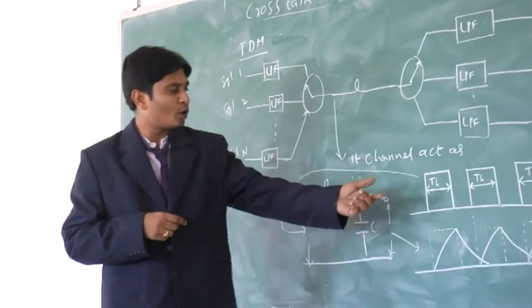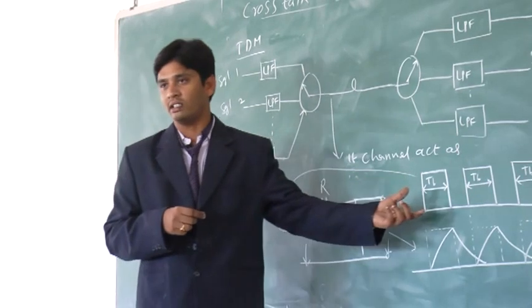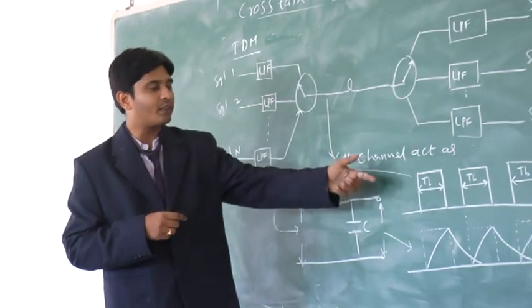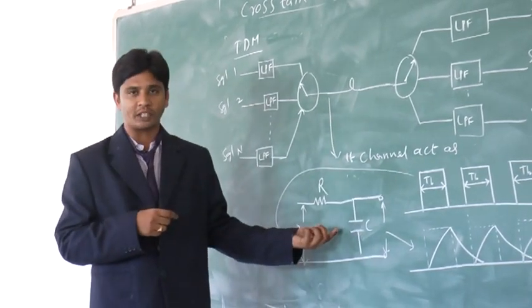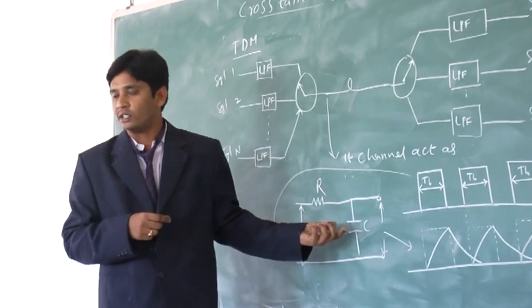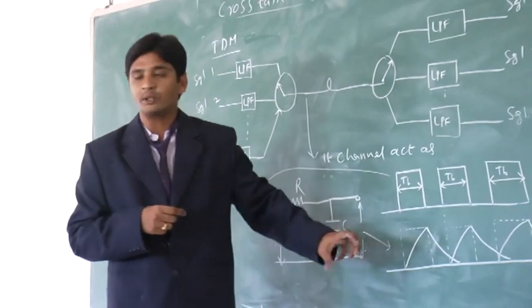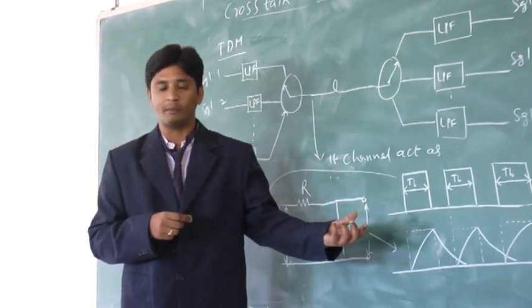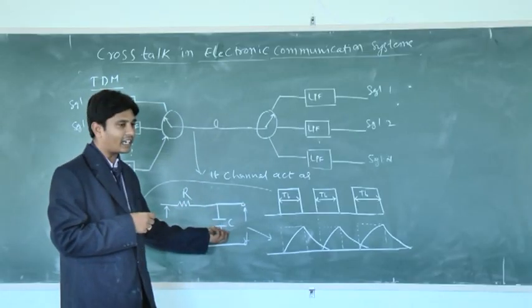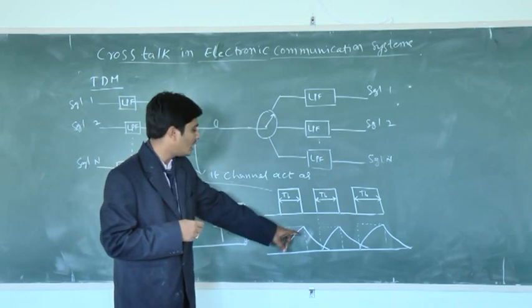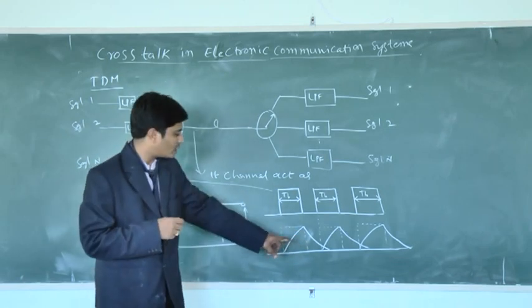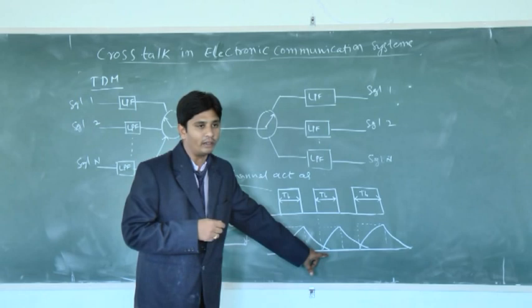The input to the low pass filter is nothing but all the multiplexed pulses of different message signals. If these are the inputs to this particular low pass filter that is nothing but the behavior of the channel like a low pass filter, the output is nothing but a dispersed version of each pulse. That means the capacitor within the channel charges to the peak amplitude and it takes time duration to discharge to the minimum value.